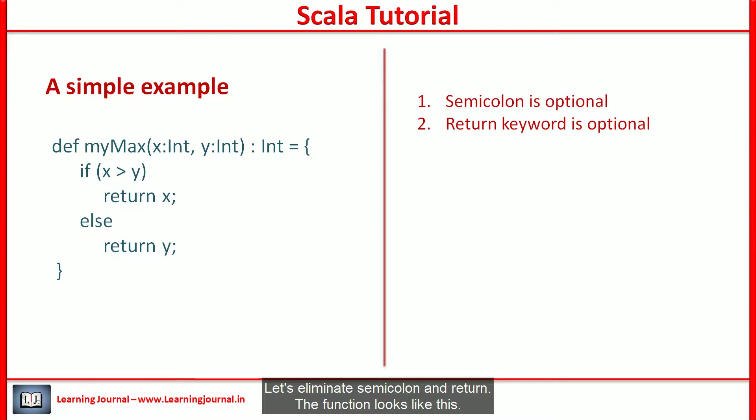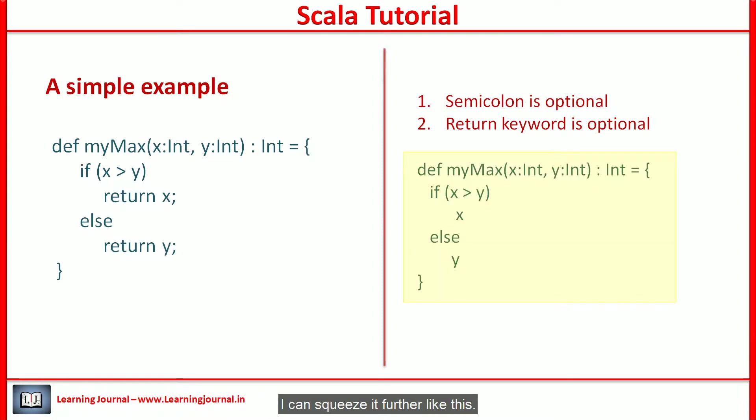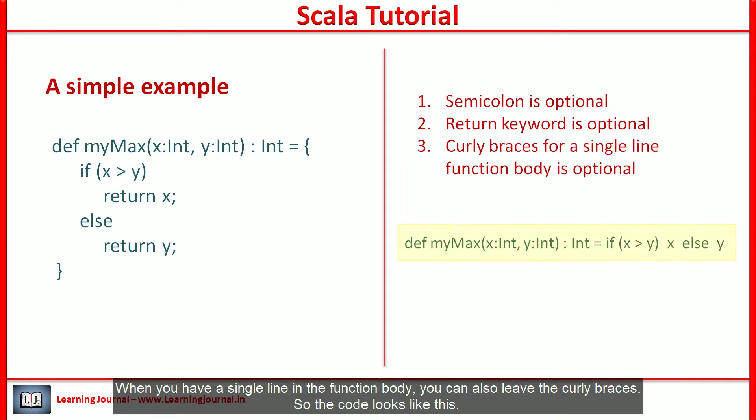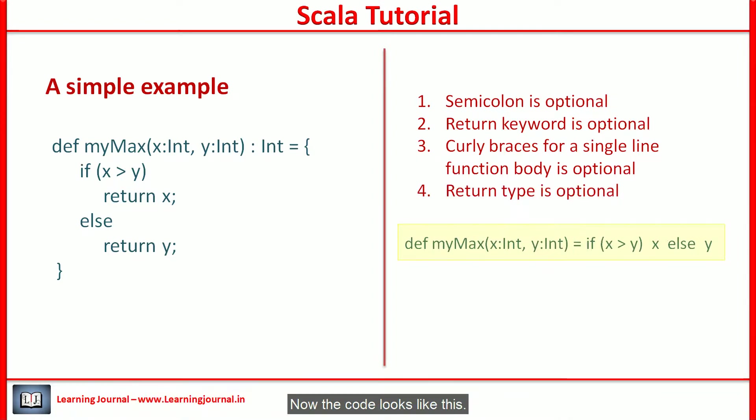The function looks like this. I can squeeze it further like this. When you have a single line in function body, you can also leave the curly braces. So, the code looks like this. We already learned that Scala compiler could infer the return type of a function. So, the return type is also optional. Now the code looks like this.